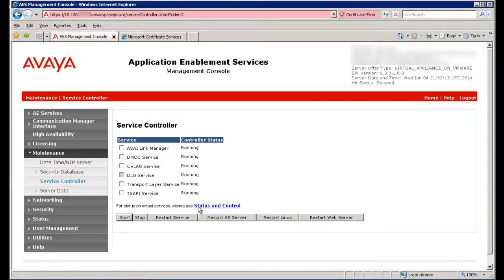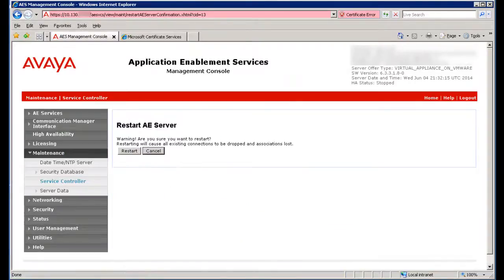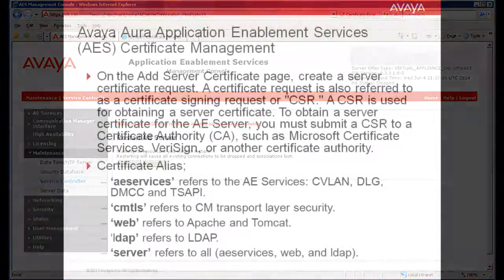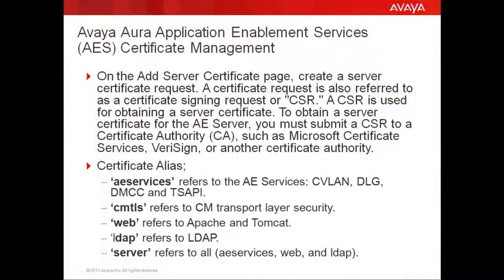Next, we will restart AES Services. Browse to Maintenance, Service Controller, and click on Restart AES Server. Next we go to Step 2 of this procedure. On the Add Server Certificate page, create a Server Certificate Request. A Certificate Request is also referred to as a Certificate Signing Request or CSR. A CSR is used for obtaining a Server Certificate.